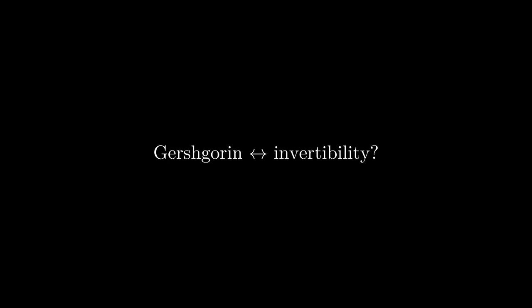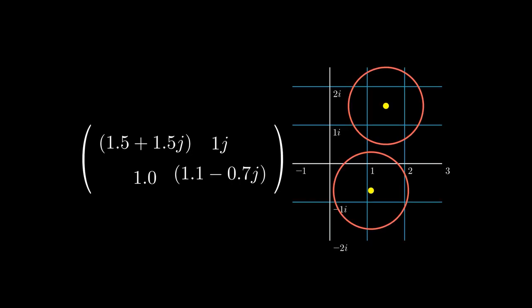Here is a proposition. If the centers of all the Gershgorin disks are far from zero, then this matrix is invertible. What do I mean? Here is an example. If a matrix is not invertible or singular, then it must have zero as an eigenvalue. By the Gershgorin theorem, that means at least one Gershgorin disk has to contain the origin. But here all the radius cannot reach that far. That means this matrix does not have zero as an eigenvalue, so this matrix is invertible. How neat the proof is!